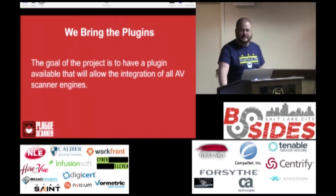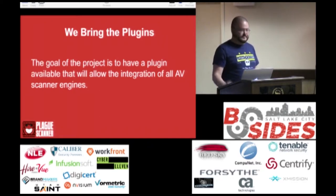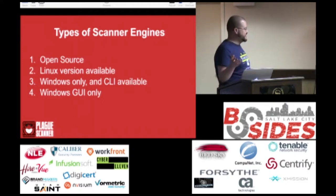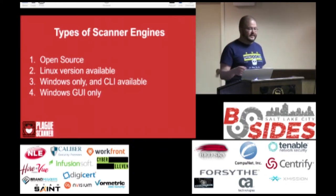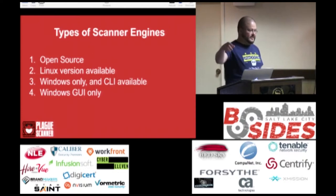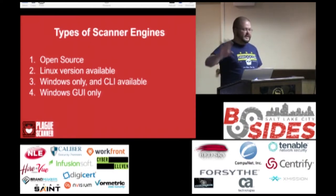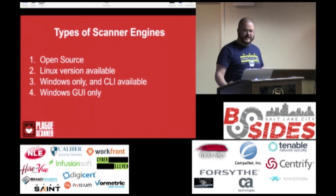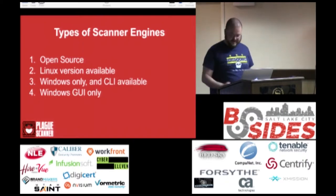I've identified four general types of scanner engines. The first is open source — I believe there's only one member of this category: ClamAV. The second has a Linux version available. Many commercial AV scanners have a Linux version, which means there's a command line, which makes it easy for me to run and pull out data via regex. I'm focused on Linux since there are no AV engines that make scanners for other Unixes without also making one for Linux. The third type is Windows-only with no Linux version — there are a lot of those.